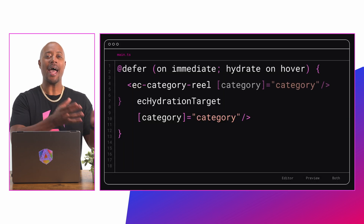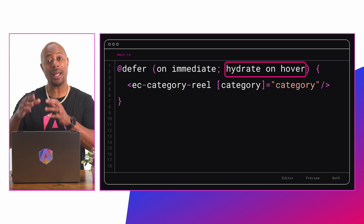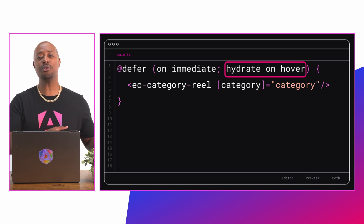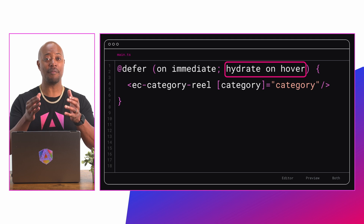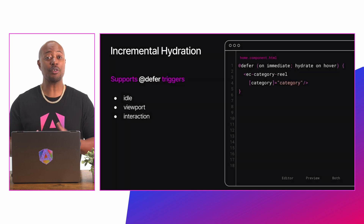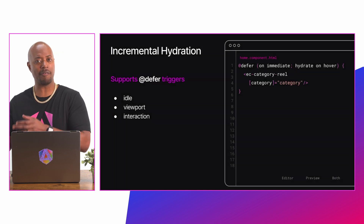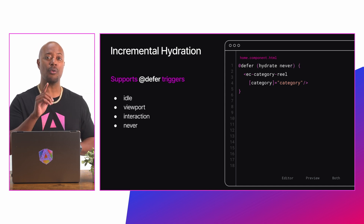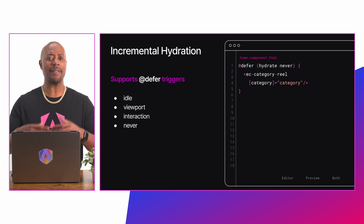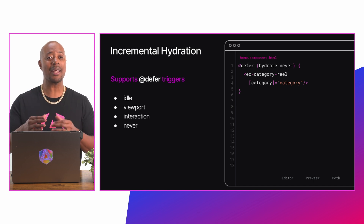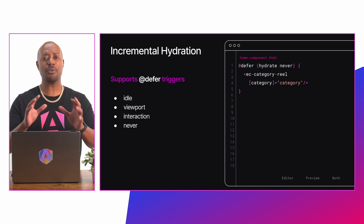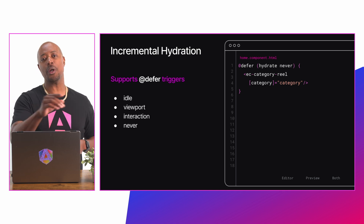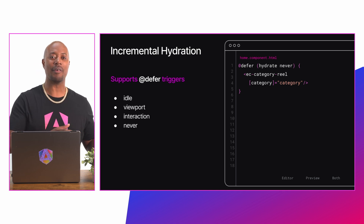Back in the application template, add incremental hydration by including a hydrate trigger as a parameter to the defer block. We use defer blocks as the foundation of this new feature, leveraging the same set of triggers used with defer — like idle, viewport, and interaction. Hydrate also gets a new trigger called never, which means that part of the app will remain static and not hydrated. It's particularly useful for non-interactive components where you want to delay loading and prevent hydration.